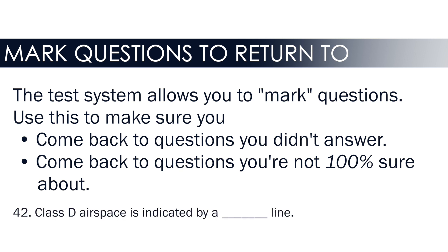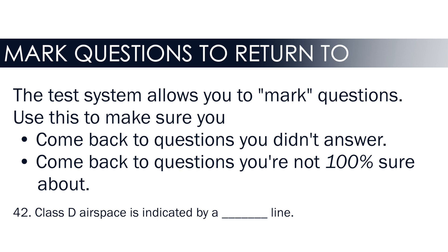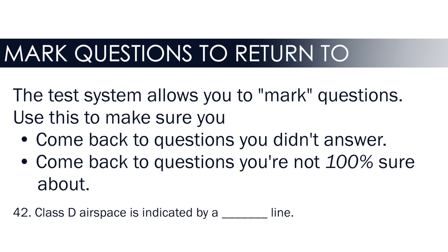For example, one question might ask: Class D airspace is indicated by a blank line. You're nervous and not sure whether it's a solid blue line or a dashed blue line. But then the very next question asks, 'The dashed blue line that indicates Class D airspace is below which type of airspace?' — and it just told you right there that Class D is the dashed blue line. So if you're not 100% sure of something, mark it as incomplete, continue through the rest of the test, then go back to those incomplete questions. A question later on might refresh your memory on one you saw earlier.